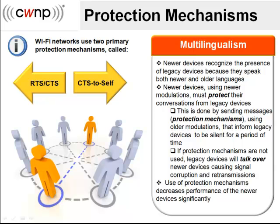The second protection mechanism is called CTS-to-Self. Access points use CTS-to-Self because all stations in the basic service set can hear the access point. A CTS-to-Self serves the same purpose as an RTS — it notifies all surrounding stations about the forthcoming exchange so they can remain quiet and wait.